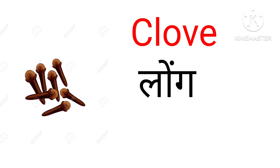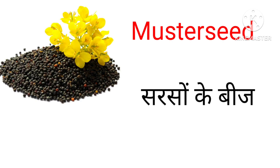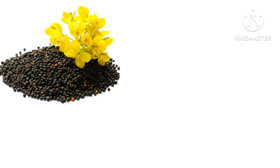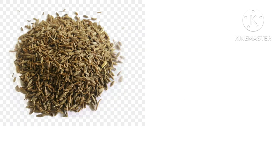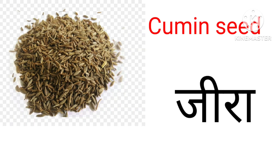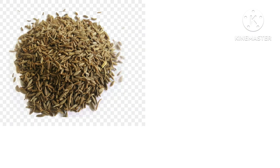Clove means Long. Mustard seed means Sorson. Curry leaves means Curry patta. Cumin seed means Jira.